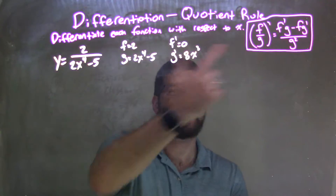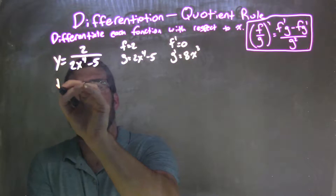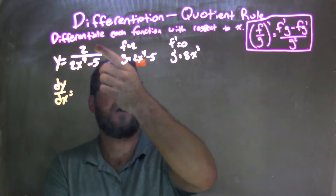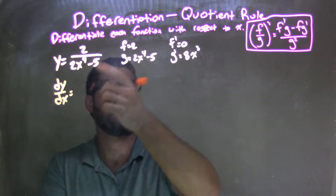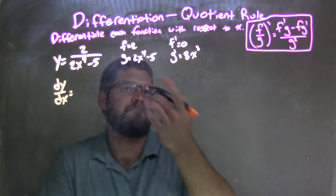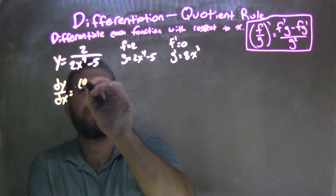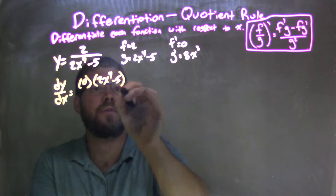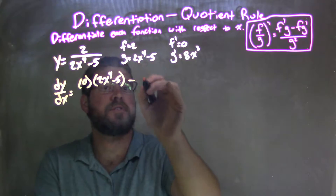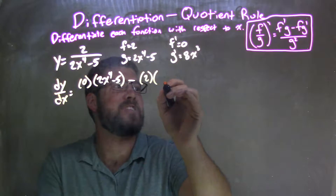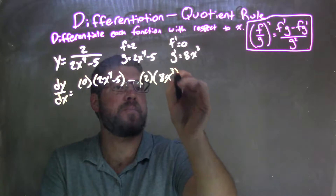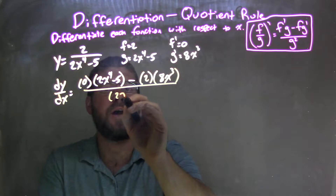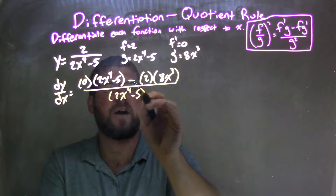So now all we need to do is apply the quotient rule. dy/dx is equal to our quotient rule — we have our f up top, our g down here, that's f over g. So let's plug in our parts: f prime is 0, times g which is 2x to the 4th minus 5, minus f which is 2, times g prime which is 8x to the 3rd, all over g squared — 2x to the 4th minus 5, squared.